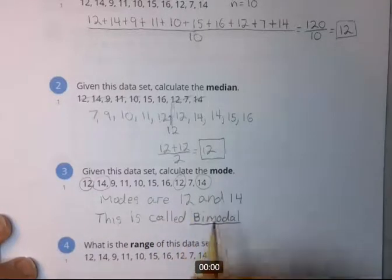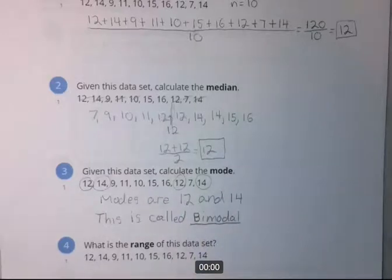So when we have more than one mode, we have two of them. So that's called bimodal. Bi simply means two. Di also means two, but di is generally used in science. Bi is generally used in math.